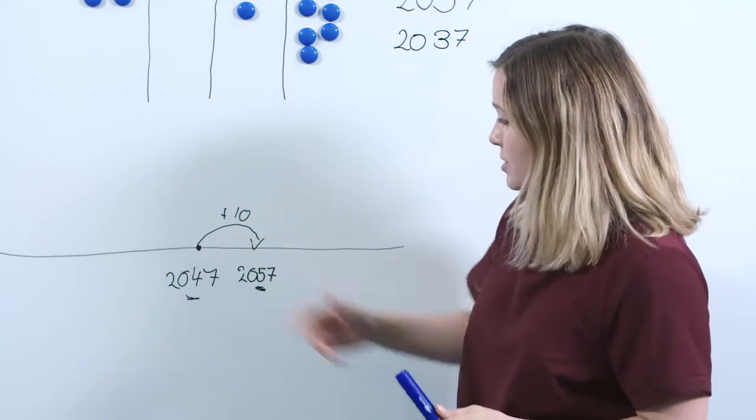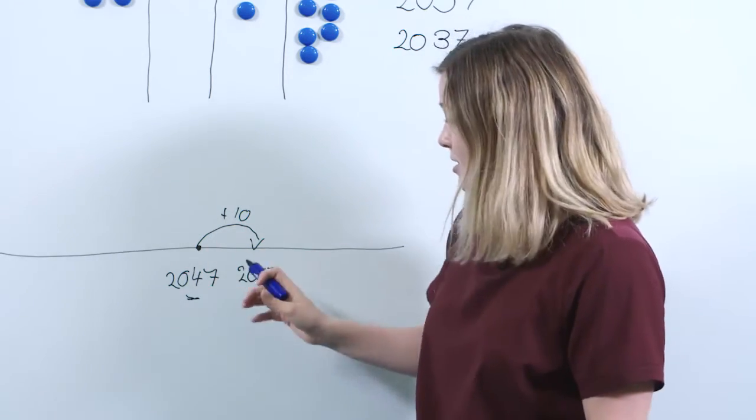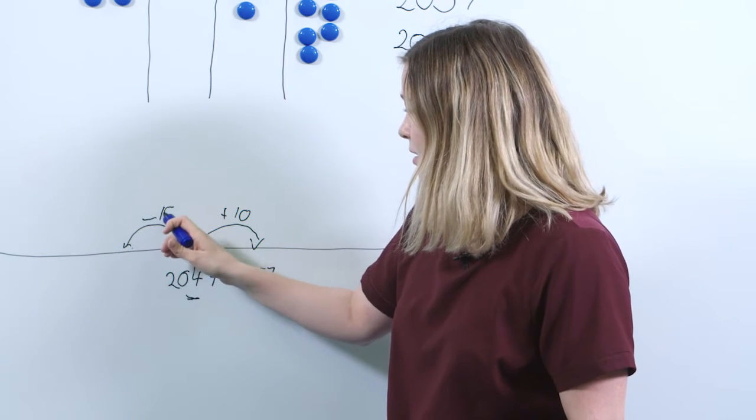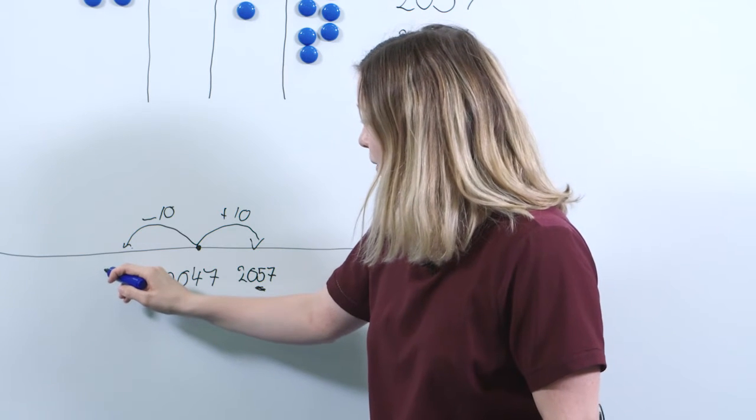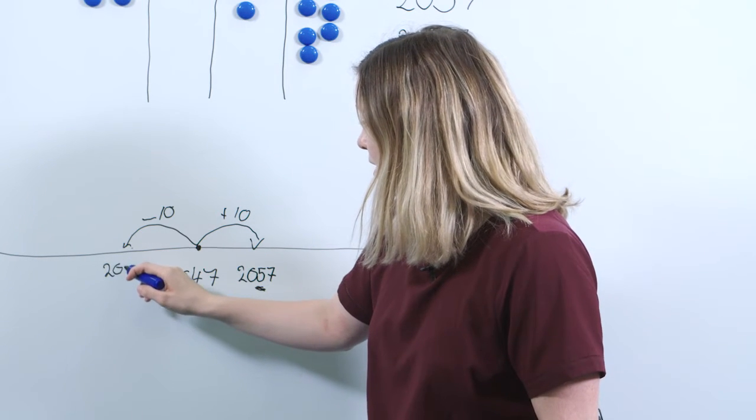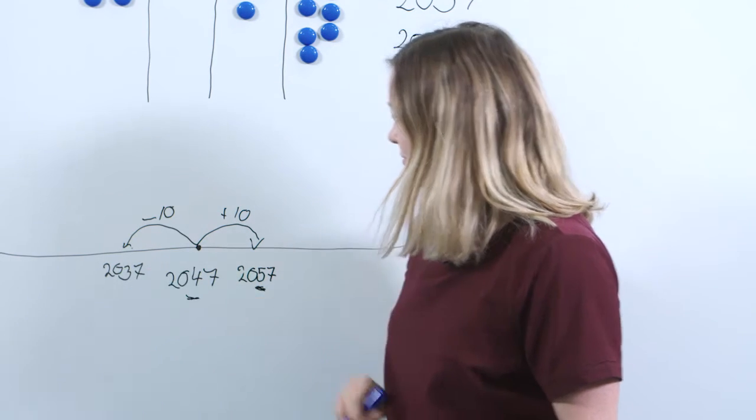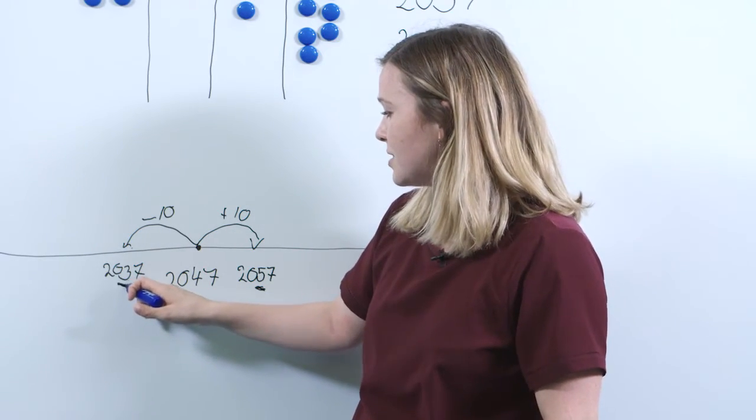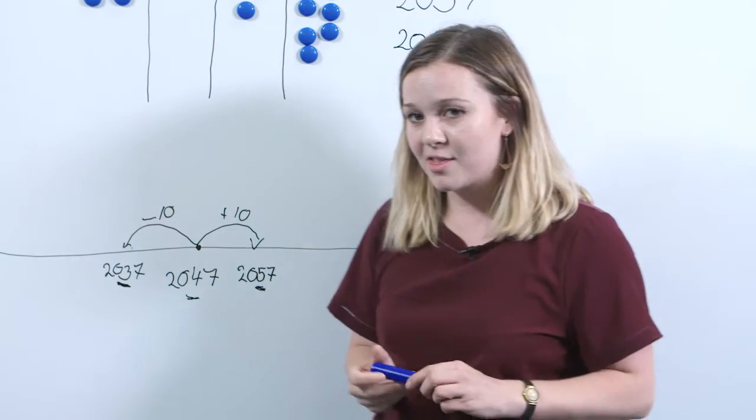Again, we can go back to our number line to help reinforce the value of what's happening with the numbers, but this time we're taking away 10. So the number underneath here is going to be 2037. Again, ask the pupils what's happened to the numbers, and we can see that it's this digit here which has changed. So we've got 2037.